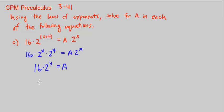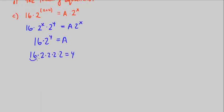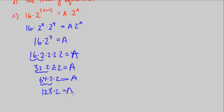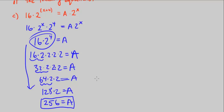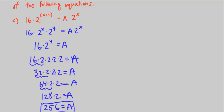What is 16 times 2 to the 4th? 2 to the 4th is 2 times 2 times 2 times 2. 16 times 2 is 32. 32 times 2 is 64. 64 times 2 is 128. 128 times 2 is 256. Maybe you could have skipped some of these steps or just plugged it into your calculator. You get 256 for a.